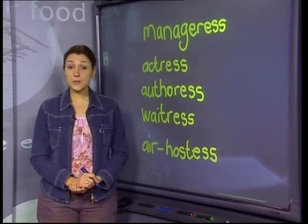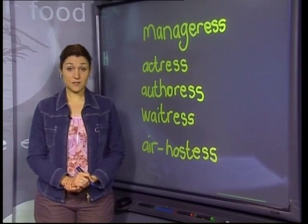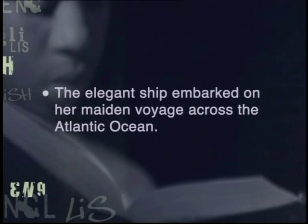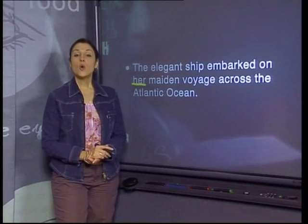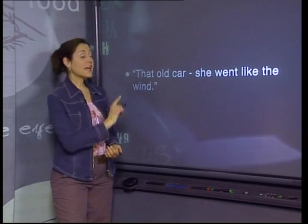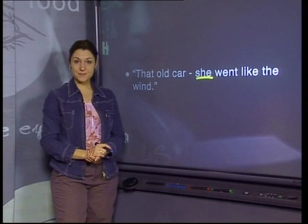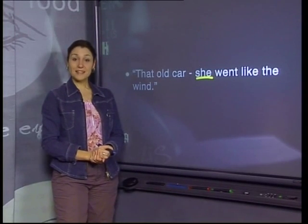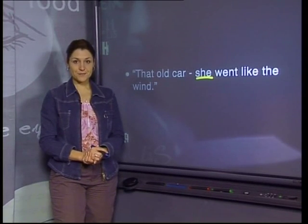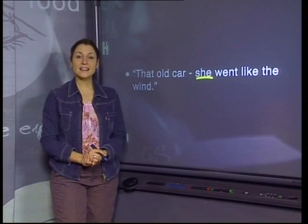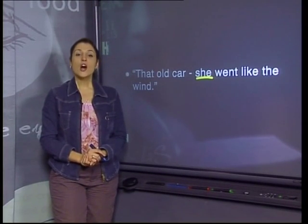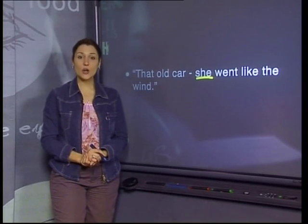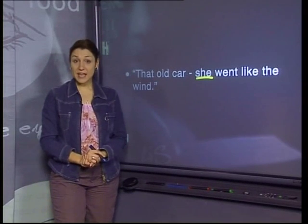We now know that some words that refer to people have gender. But have you ever heard of an object being given a gender? If you read some of the older English texts, you may come across ships or cars that are referred to as female. You may read about a ship that has made her maiden voyage across the Atlantic, or a sentence like: 'That old car, she went like the wind.' Maybe it's because anything that was beautiful, expensive and desired was considered to be female. Nowadays, we don't really use gendered nouns for objects — objects are of neutral gender, referred to as it rather than he or she.